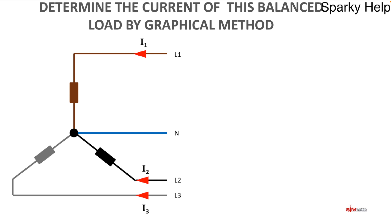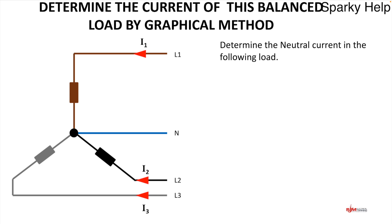There are many different ways to calculate the neutral current. We're going to look at the graphical method first — it's one of the easiest and very good for most people to understand. The question is: determine the neutral current in a load where the current in each phase is 25 amps, 25 amps, and 25 amps. We already know the answer is zero, but we're going to prove it.